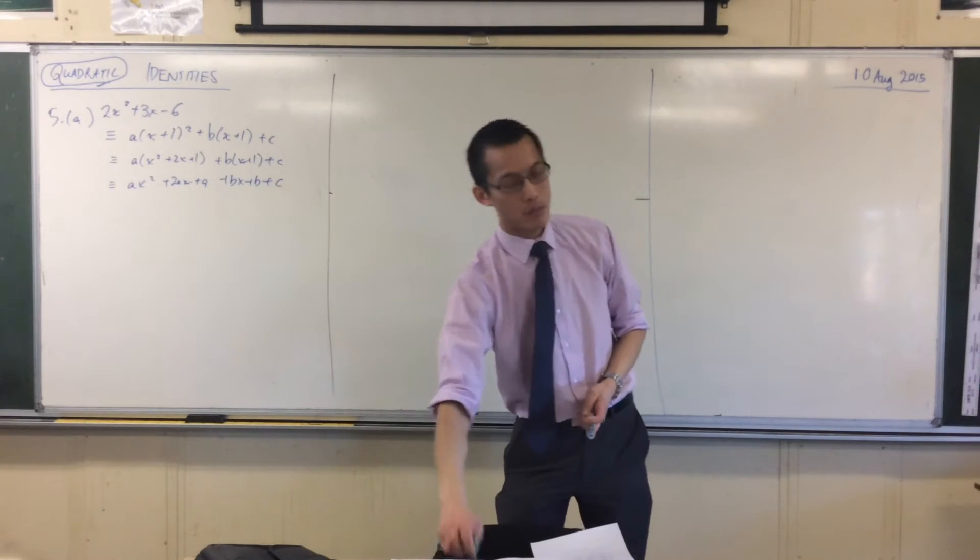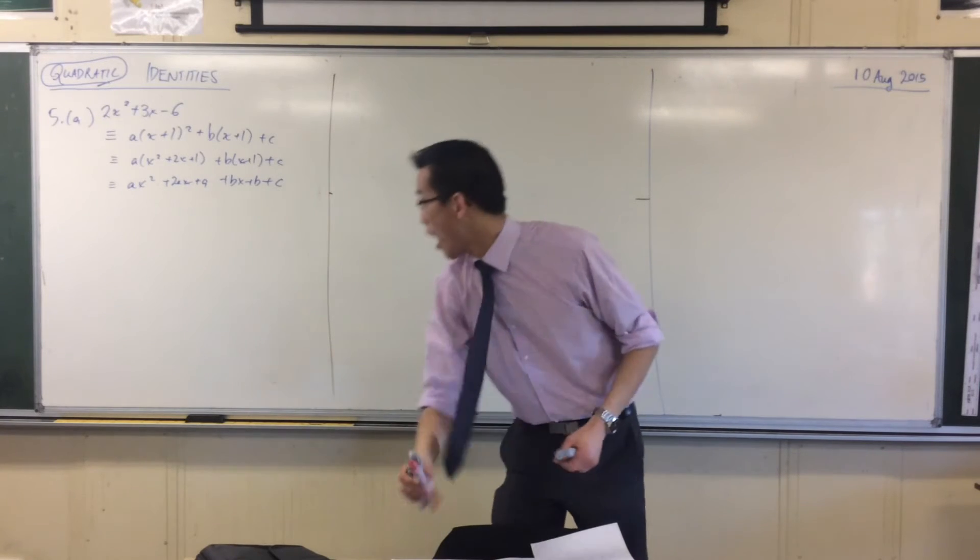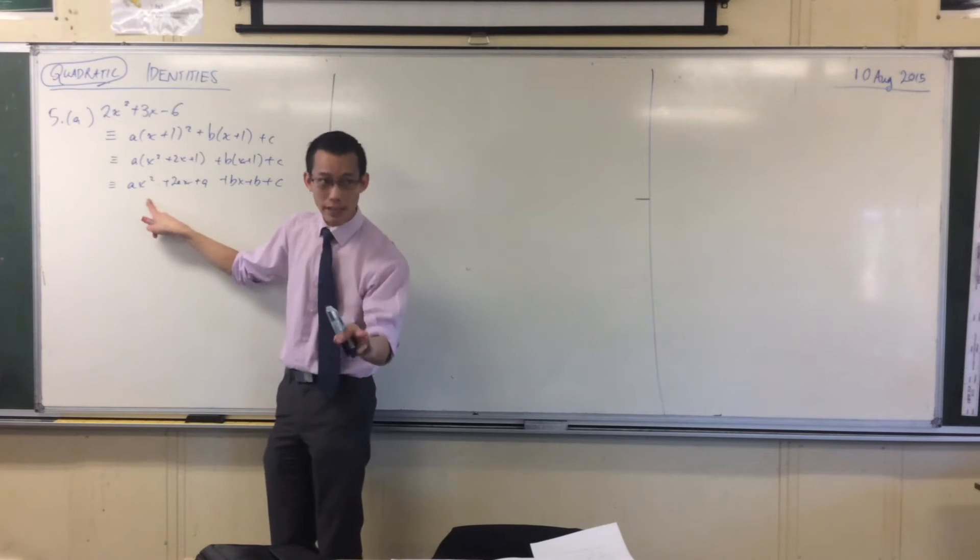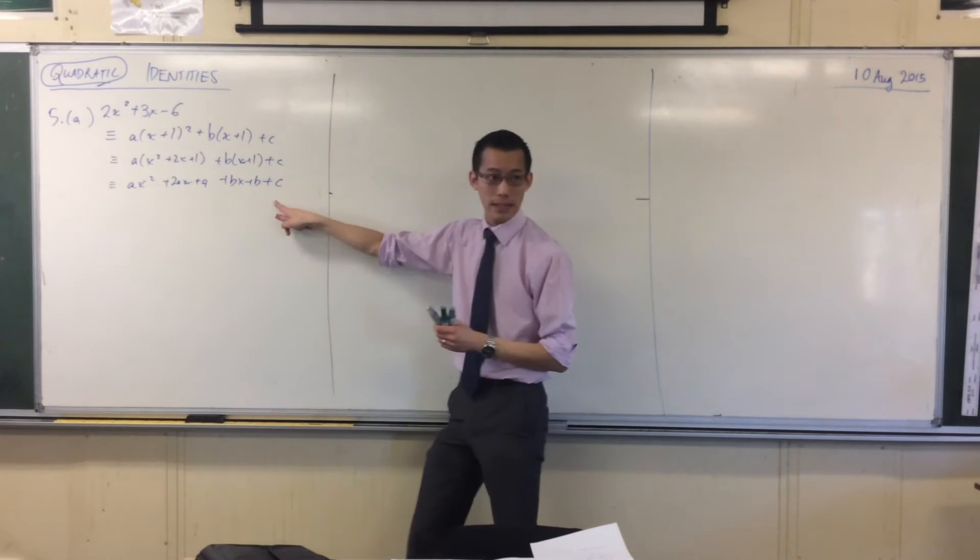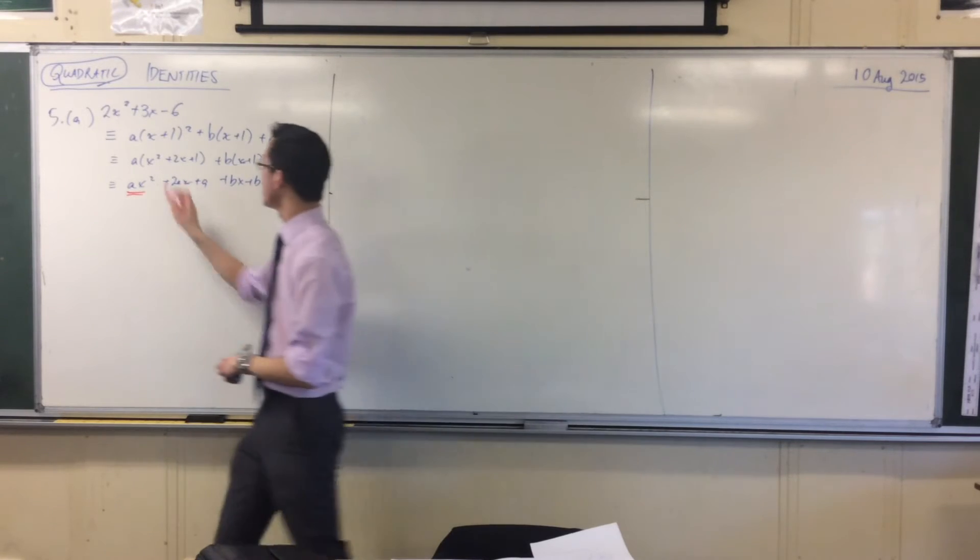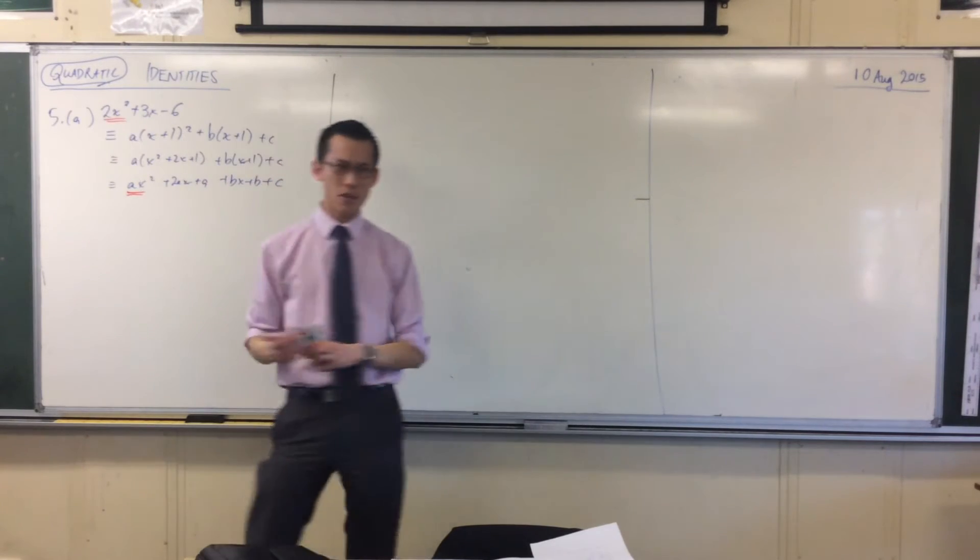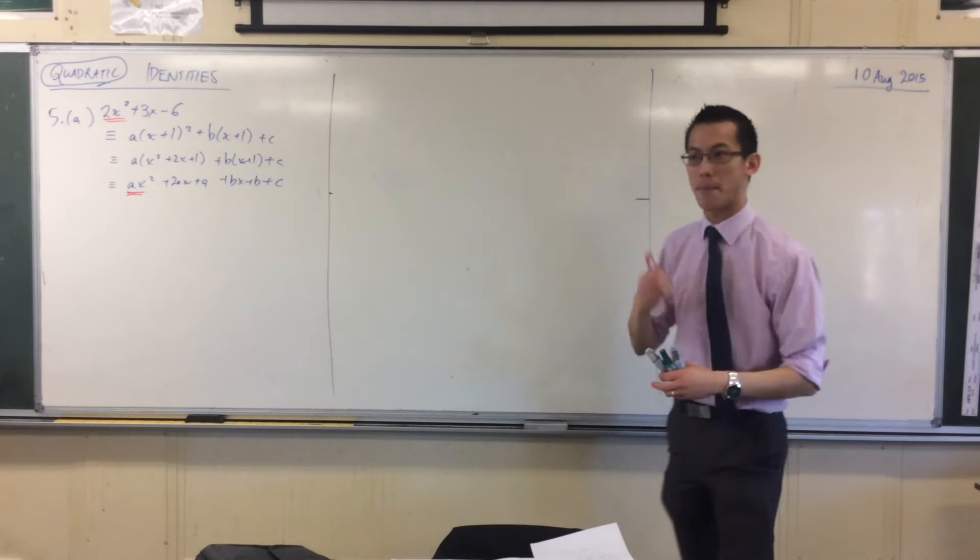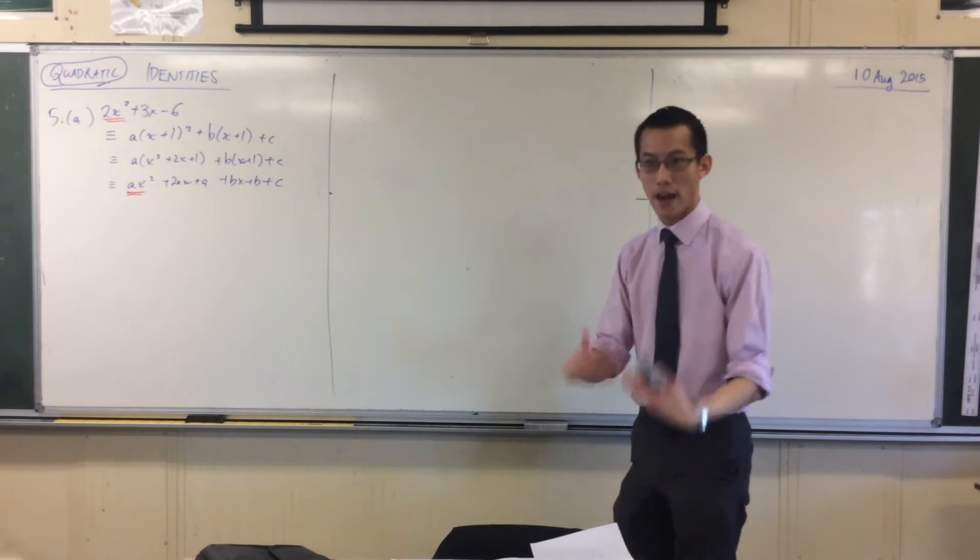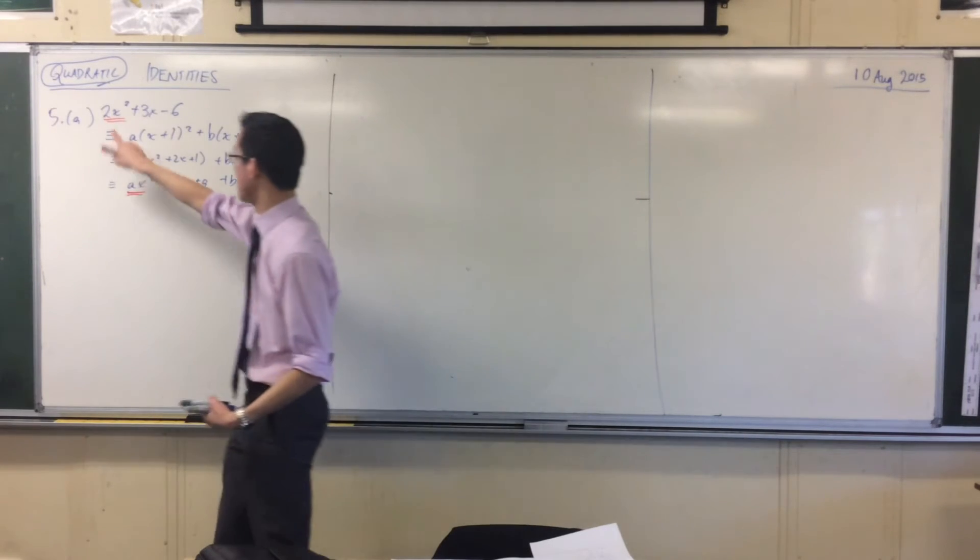But before I do that, look carefully at what we have. I have an x² term here—it's the only x² term in this whole long list. This x² term must correspond to this x² term. Remember when I said a parabola is uniquely defined by three points? That corresponds to the fact that it's uniquely defined by three coefficients. So this coefficient and that coefficient have to be the same.